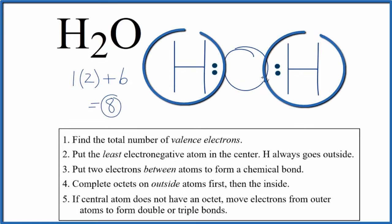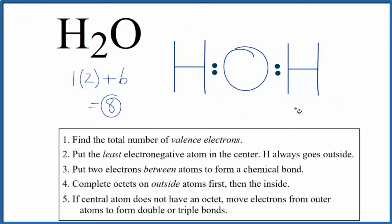Hydrogen only needs 2 valence electrons to have its outer shell full. So hydrogen's okay. Let's put electrons on the oxygen to give it an octet. So now the oxygen has an octet, 8 valence electrons. We've used only 8 valence electrons. This is the correct Lewis structure for H2O, water.